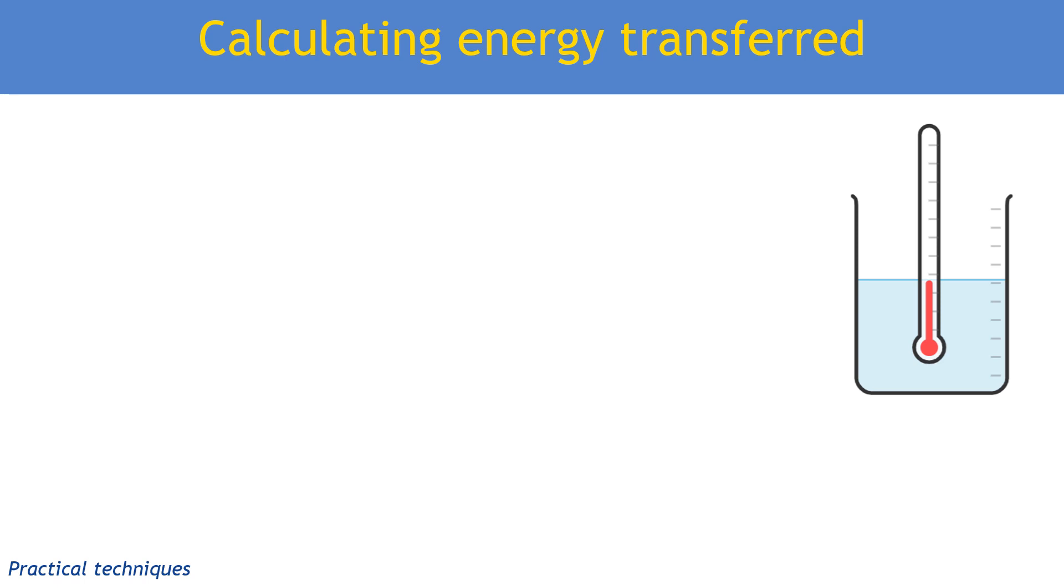All enthalpy change experiments rely on one important idea: that water has a fixed property called specific heat capacity, given the shorthand symbol c. The specific heat capacity of water is 4.18 joules per gram per kelvin. This value will always be given to you in your exam or as part of your data booklet. You may see it rounded to 4.2, and if so, use that value.